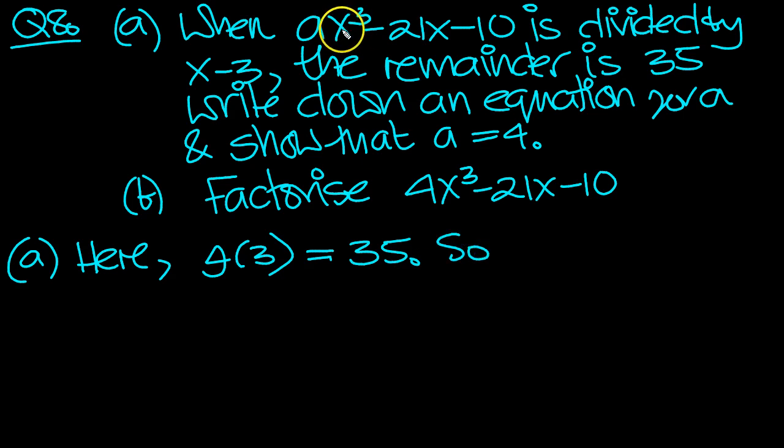So let's put that in. We've got 3 cubed is 27a, because 3 cubed is 27, minus 3 times 21 is 63, minus 10, that's f of 3, equals 35.